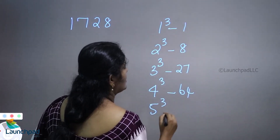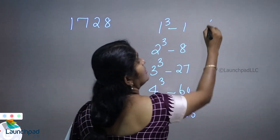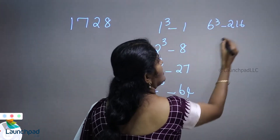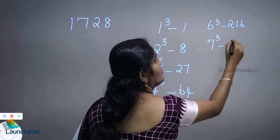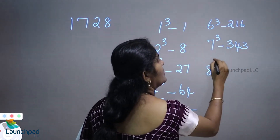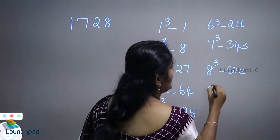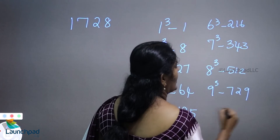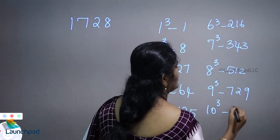5 cubed is 125, 6 cubed is 216, 7 cubed is 343, 8 cubed is 512, 9 cubed is 729, and 10 cubed is 1000.